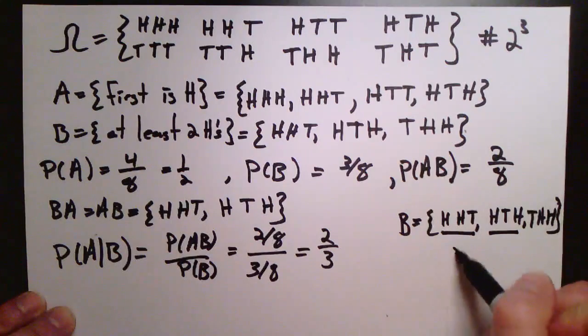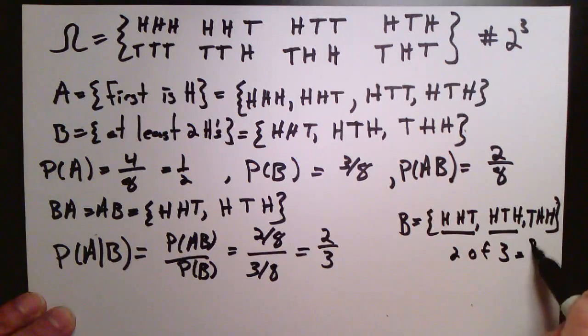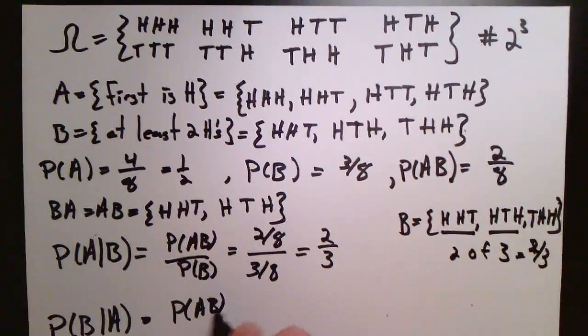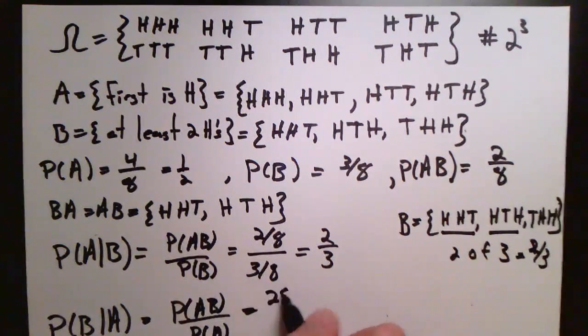And this makes sense. If we just look at B, two out of three of the elements in B also satisfy A. So if we know that we're already in the set B, the chance of A happening is exactly two thirds.